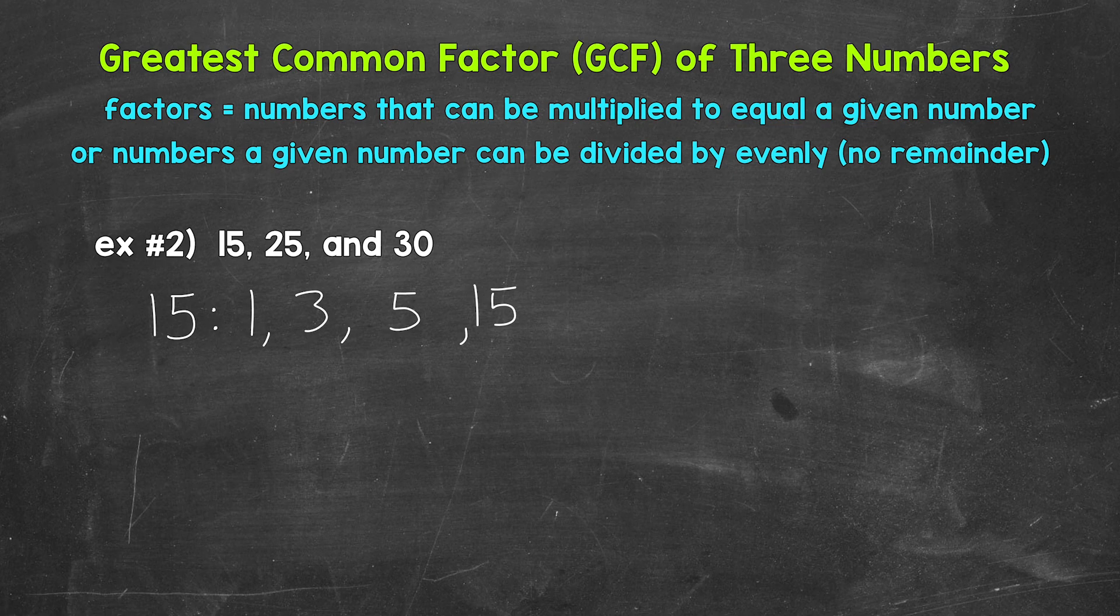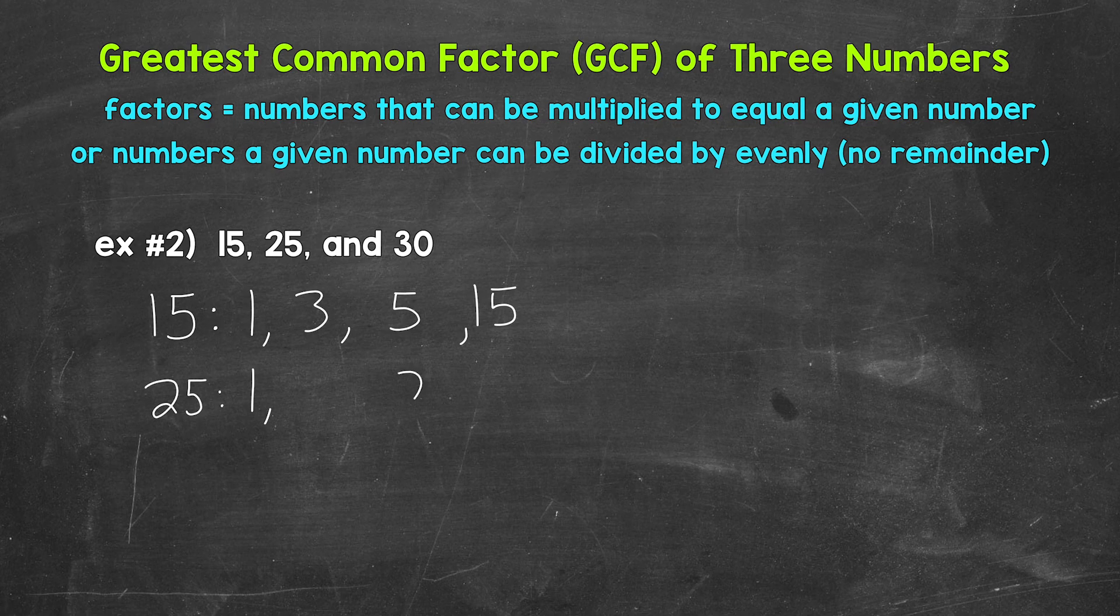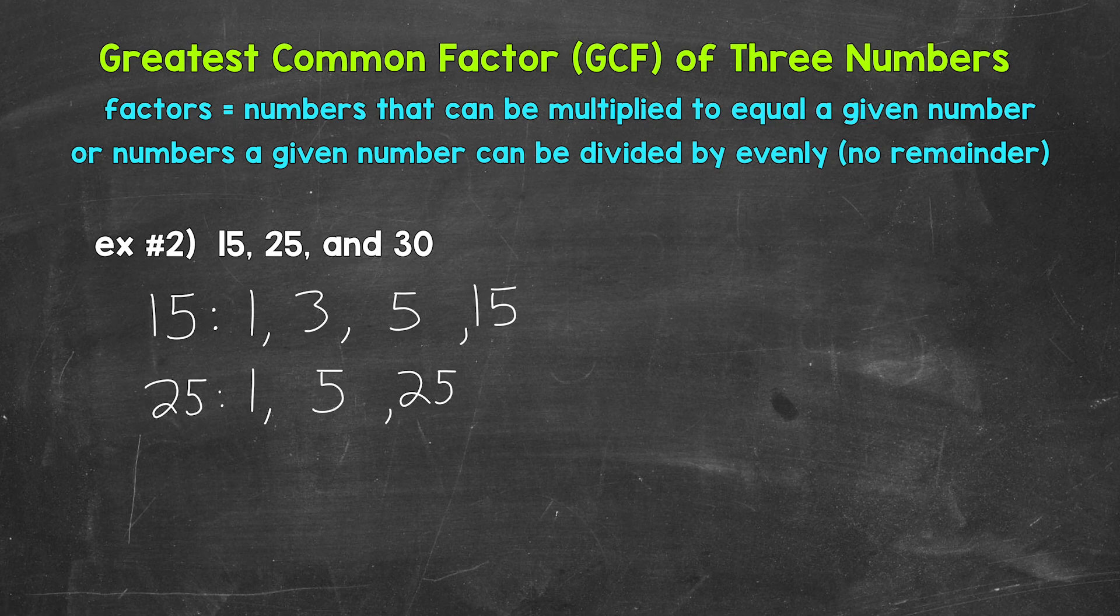Let's move on to the factors of 25. Let's start with 1 and 25. Now the only other factor of 25 is 5. 5 times 5 equals 25. So 5 is a factor of 25. Although 5 times 5 equals 25, we only need to write 5 once in our factors list.